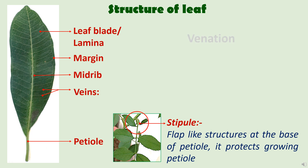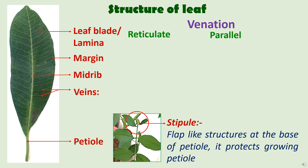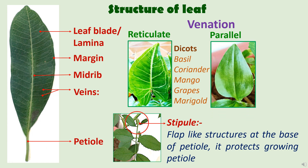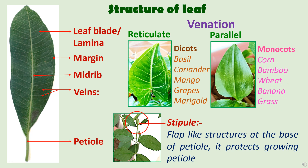The arrangement of veins on the leaf is called venation. There are mainly two types: reticulate venation and parallel venation. In reticulate venation, the veins give a net-like appearance, and this type of venation is found in dicot plants — examples are basil, coriander, mango, grapes, and marigold. In parallel venation, the veins run in a straight line throughout the length of the leaf without converging, and this type is found in monocots — examples are corn, bamboo, wheat, banana, and grass.